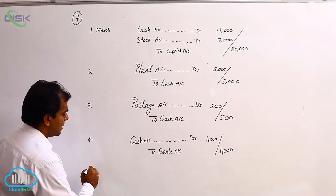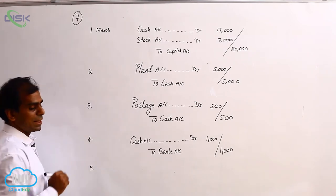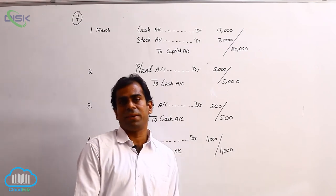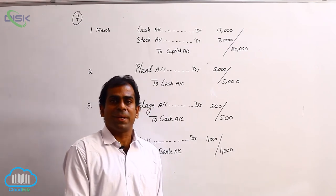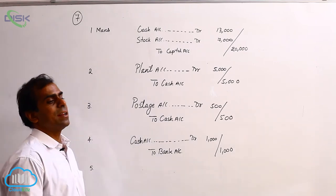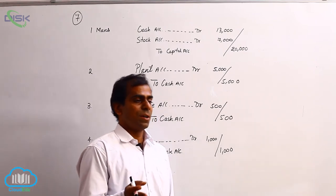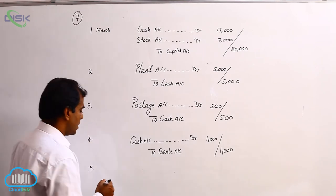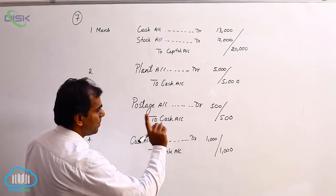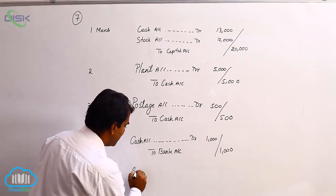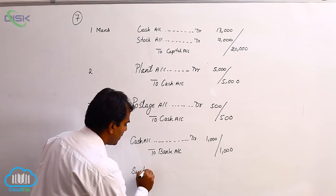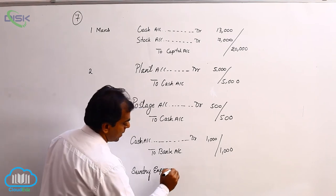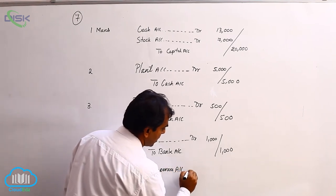Now, next transaction is on fifth. The transaction is paid for sundry expenses. Now, what are sundry expenses? They are small expenses what you pay and as a result they become your nominal account. So nominal account and being expense we have to debit it. So we say sundry expenses account debit.